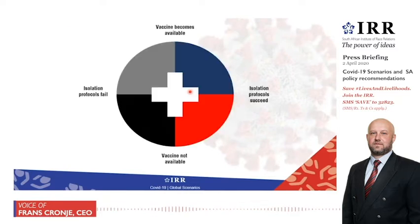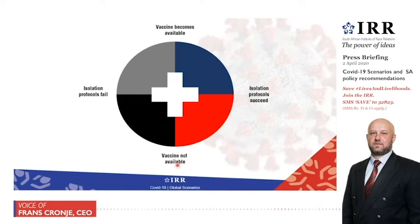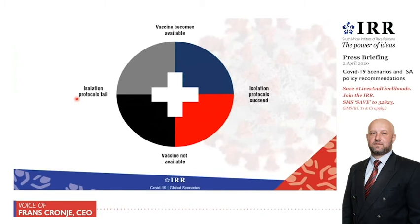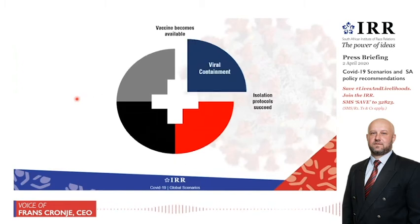There's the same axis: vaccine availability and not available, isolation succeeding and isolation failing, presented more colourfully in order to introduce the scenarios.